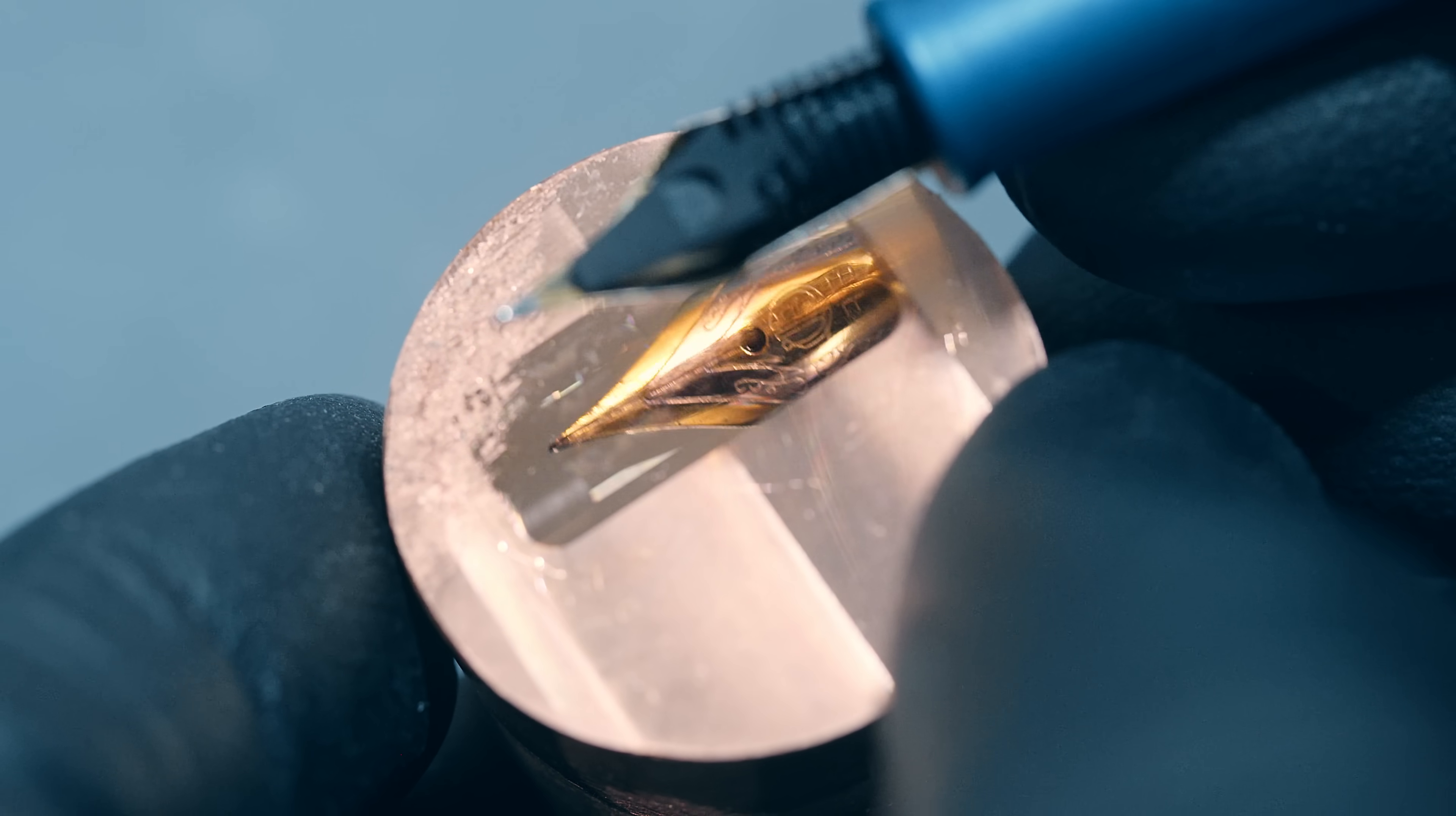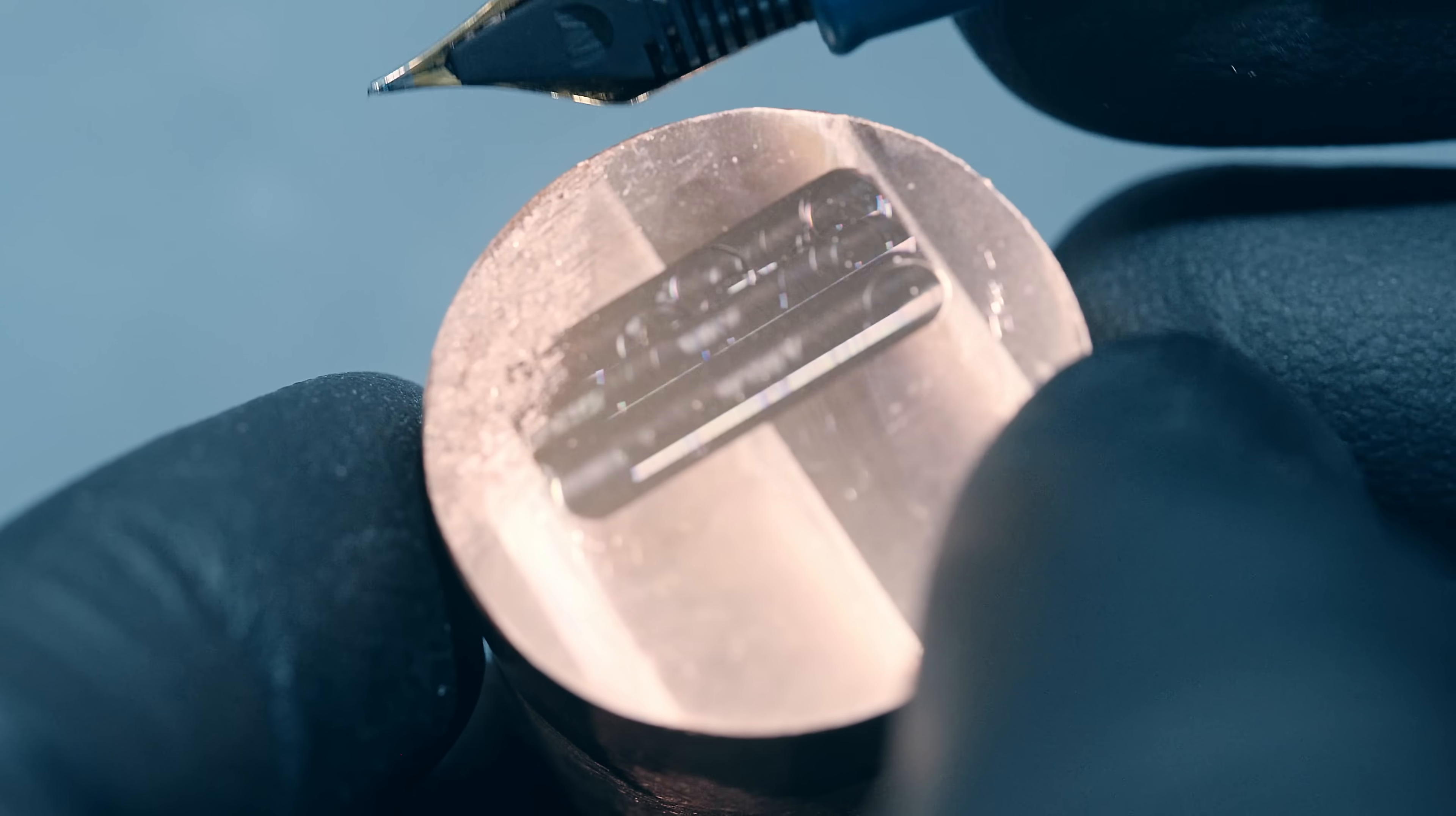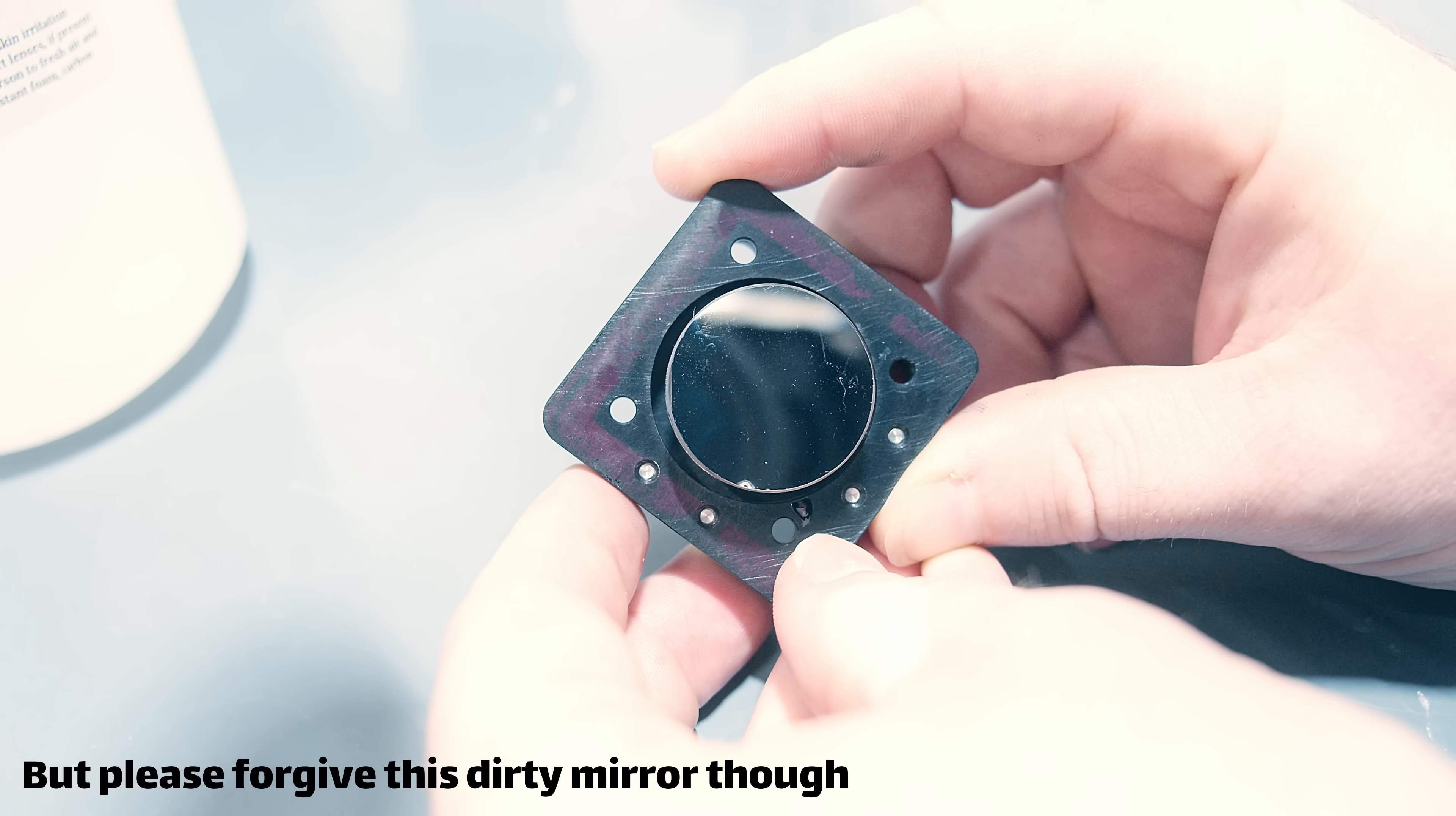So a diamond can cut a reflective mirror surface, but it will only be an optical surface if the motion of the CNC machine is smooth enough to generate a flat parallel surface needed for a mirror. An optical surface is just very unforgiving.